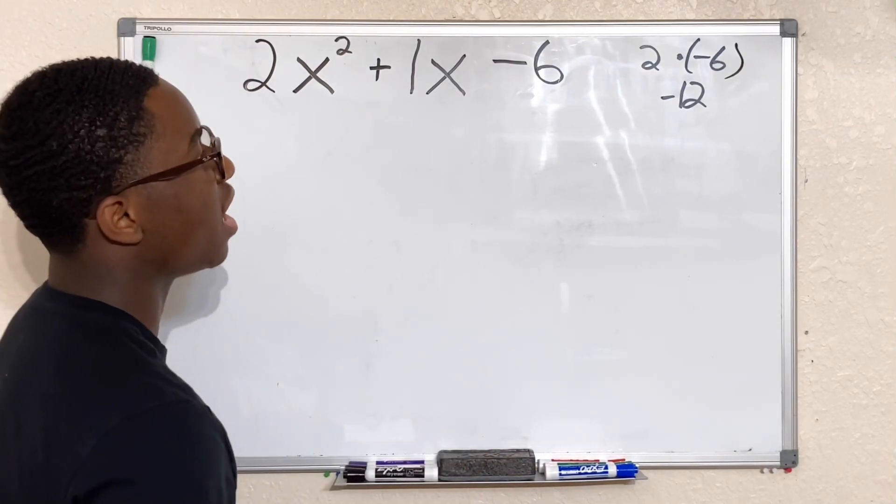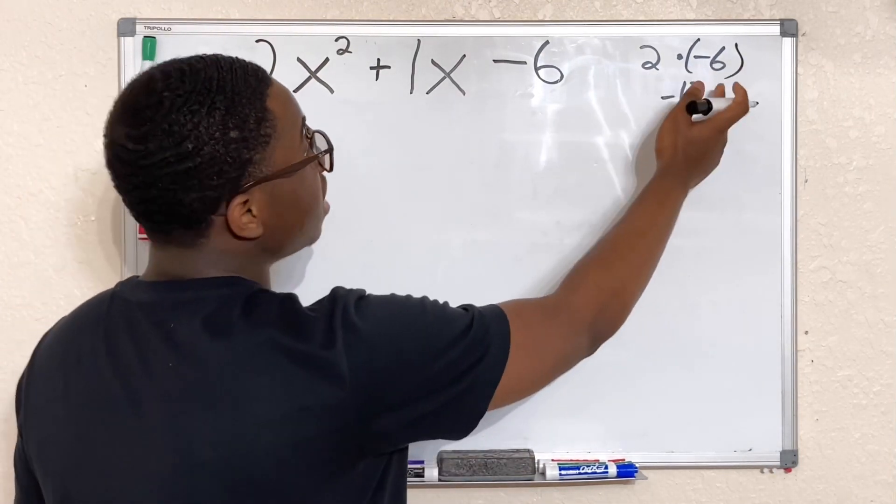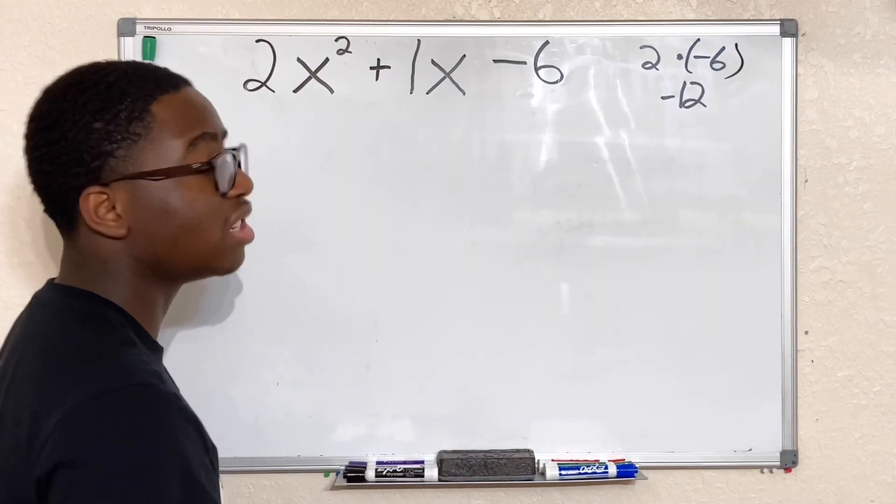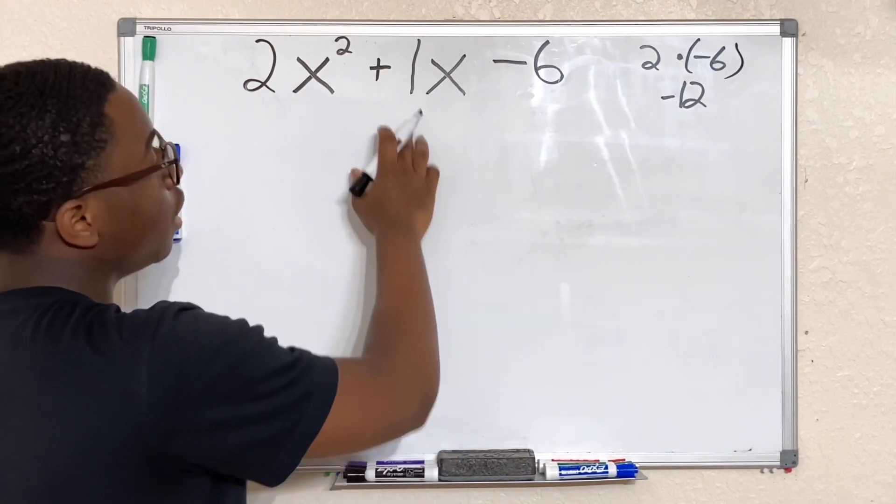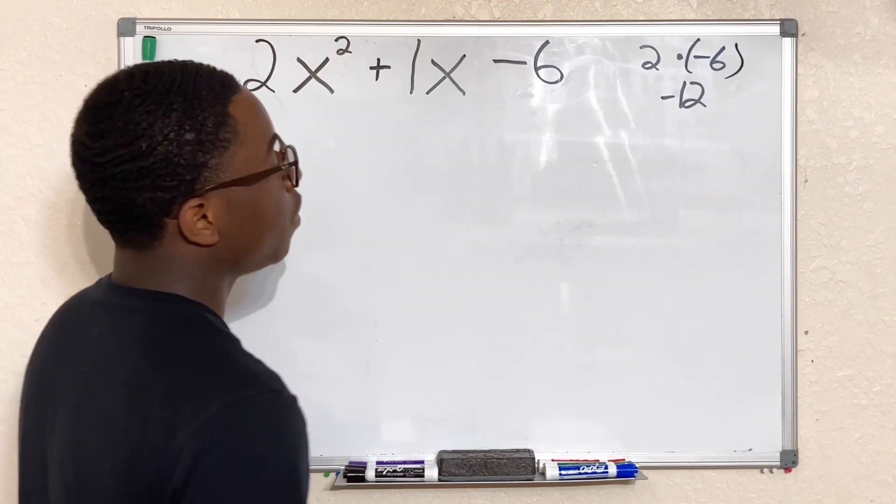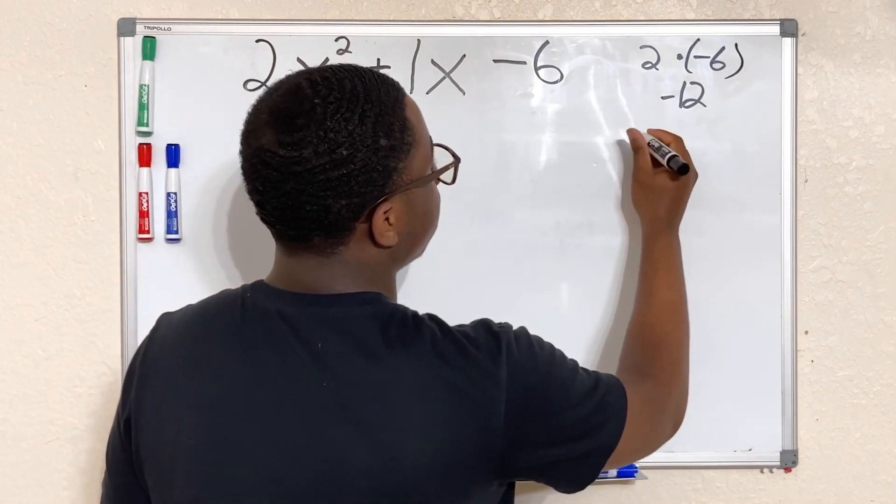What two numbers do we have? Well, we have 2 and -6, but 2 plus -6 is going to give us a -4. That's not 1. How about -4 and 3?